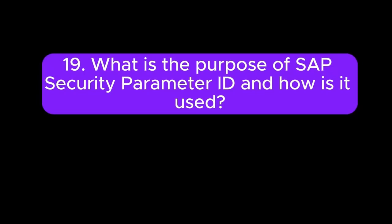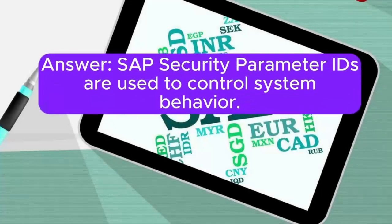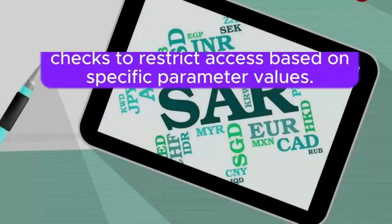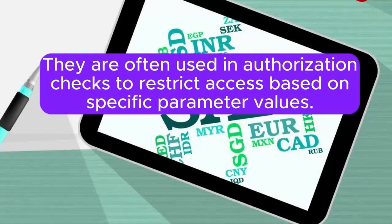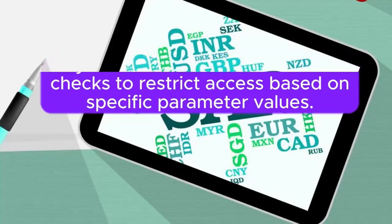Question 19: What is the purpose of SAP security parameter IDs and how are they used? Answer: SAP security parameter IDs are used to control system behavior. They are often used in authorization checks to restrict access based on specific parameter values.